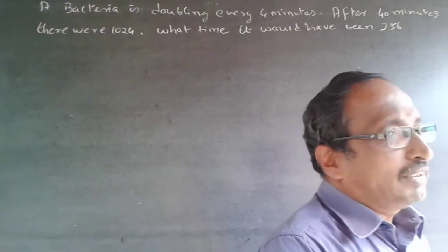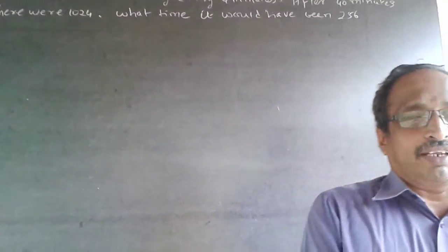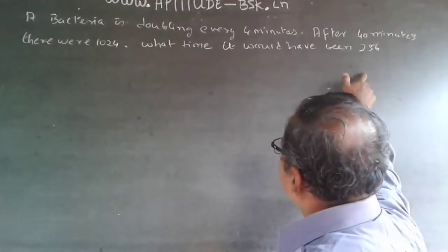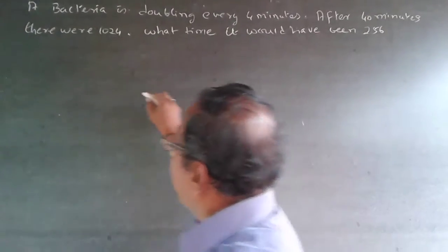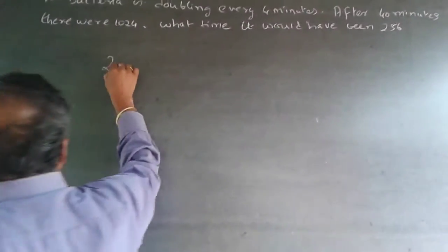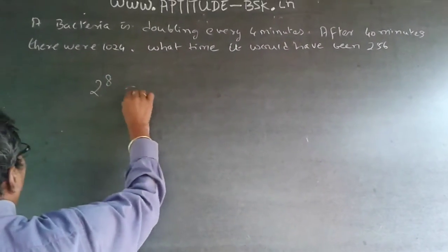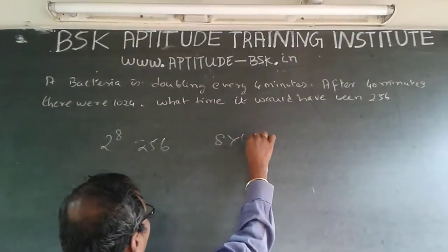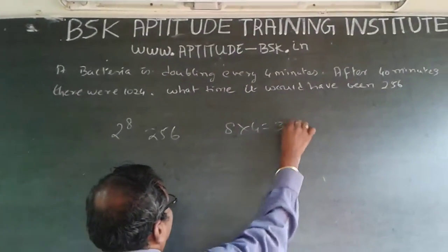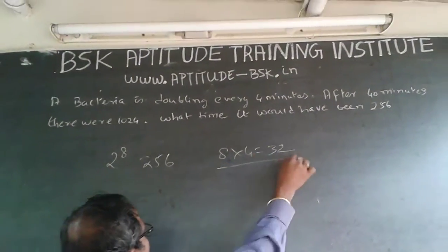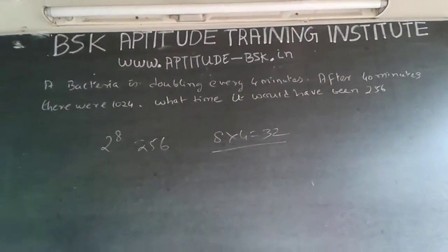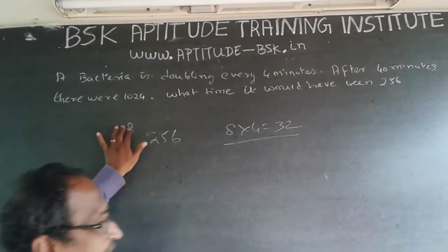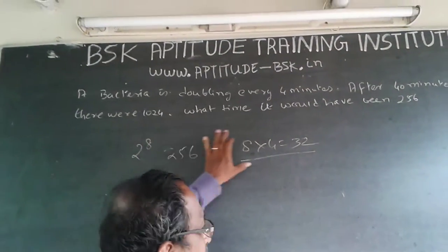The easiest way of doing it: 256 is nothing but 2 to the power 8. So 2^8 = 256, meaning 8 intervals of 4 minutes each, so 8 × 4 = 32. That's the easiest way. Some of you might have difficulty understanding what 2^8 is, so here's another method.